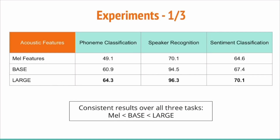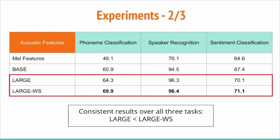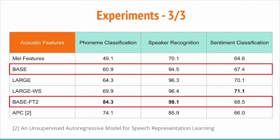In this table, we list results of the three downstream tasks. Results are consistent over all three tasks, where the base model outperforms the baseline mel features, while the large model outperforms the base model. Integrating hidden representations from all layers via weighted sum, denoted as large WS, gives a performance boost over all tasks. Fine-tuning also gives a performance boost, in particular in the phone classification case. The base FT2 model achieved the highest score on the phone classification and speaker recognition tasks, outperforming all features, whereas the large WS model achieved the highest score on the sentiment classification task, outperforming baseline and APC features.